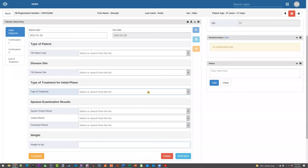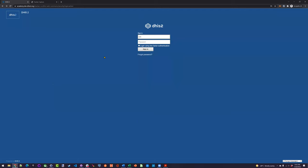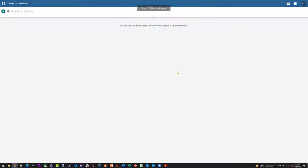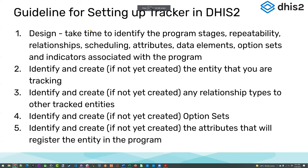Now let's get into the actual configuration. We're going to follow our step-by-step approach to create our program. Going back to the presentation — we've gone through the design, so the next step is to look at the tracked entity type. We're tracking TB patients, so we're tracking a person. The tracked entity type we need in the system is a person, and this can be reused — whether it's an antenatal care program or an immunization program, you're also tracking a person. You need at least one in the system; if you don't have any, it won't work.